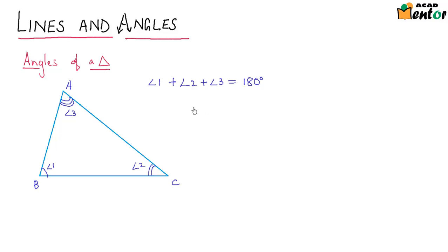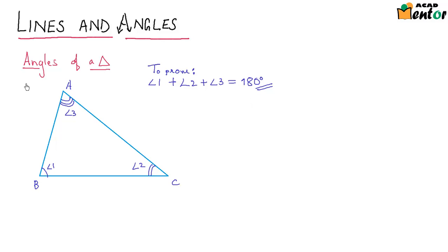Now, do you think we can prove this using the relationships we've just seen in the previous concepts? Let's see how. We are supposed to prove that angle 1 plus angle 2 plus angle 3 is nothing but 180 degrees. Let's do a small construction that would help us prove this particular condition.